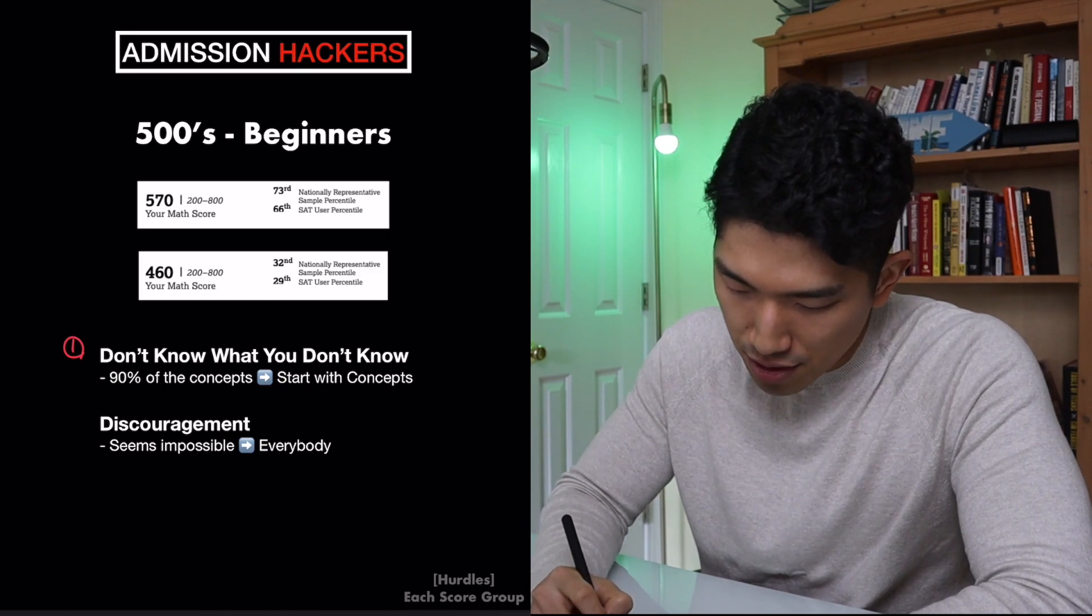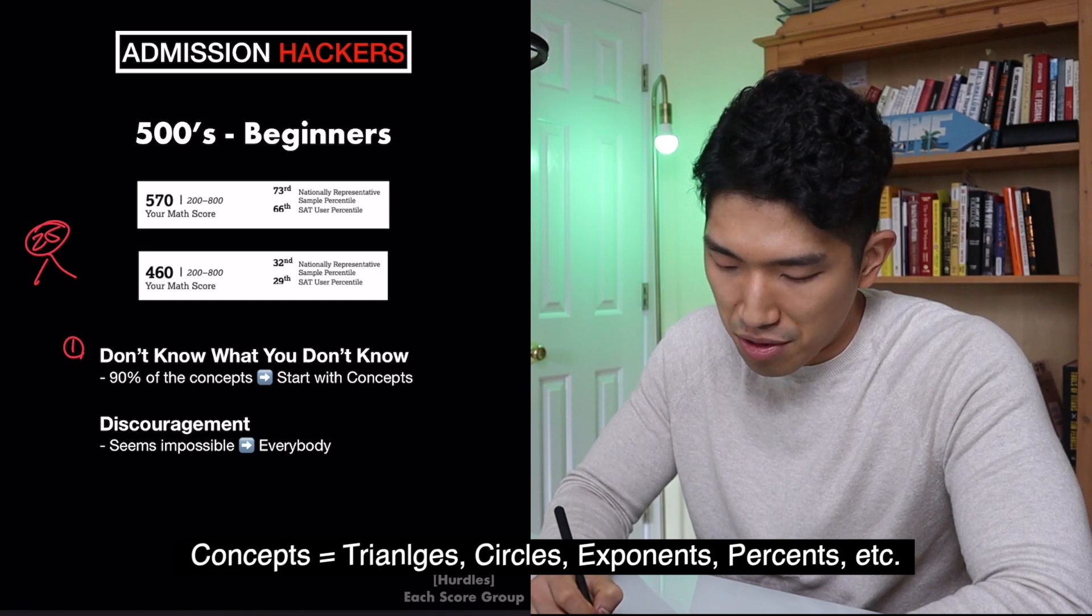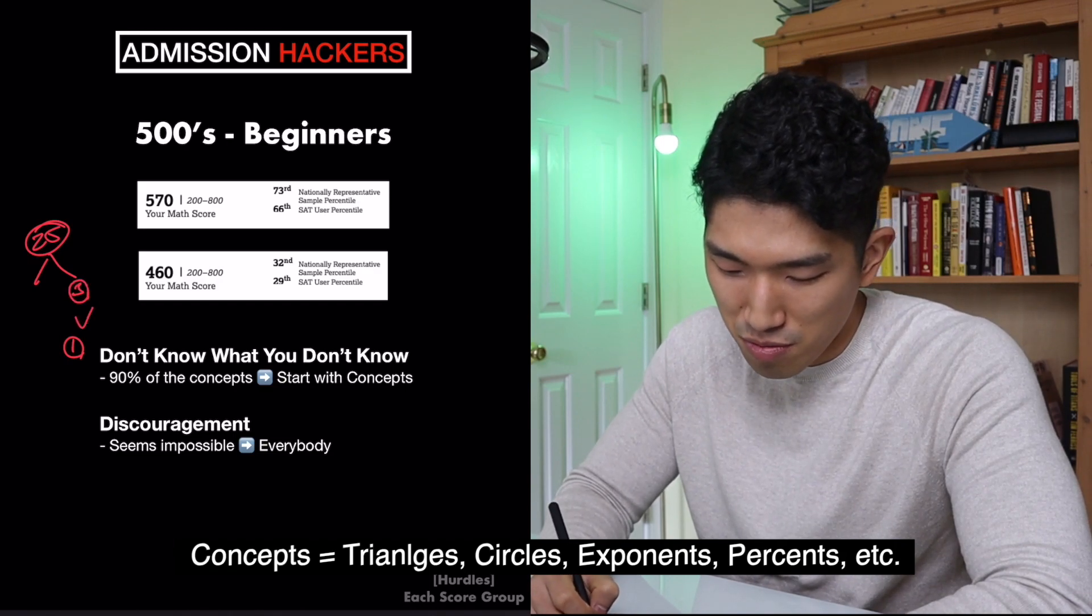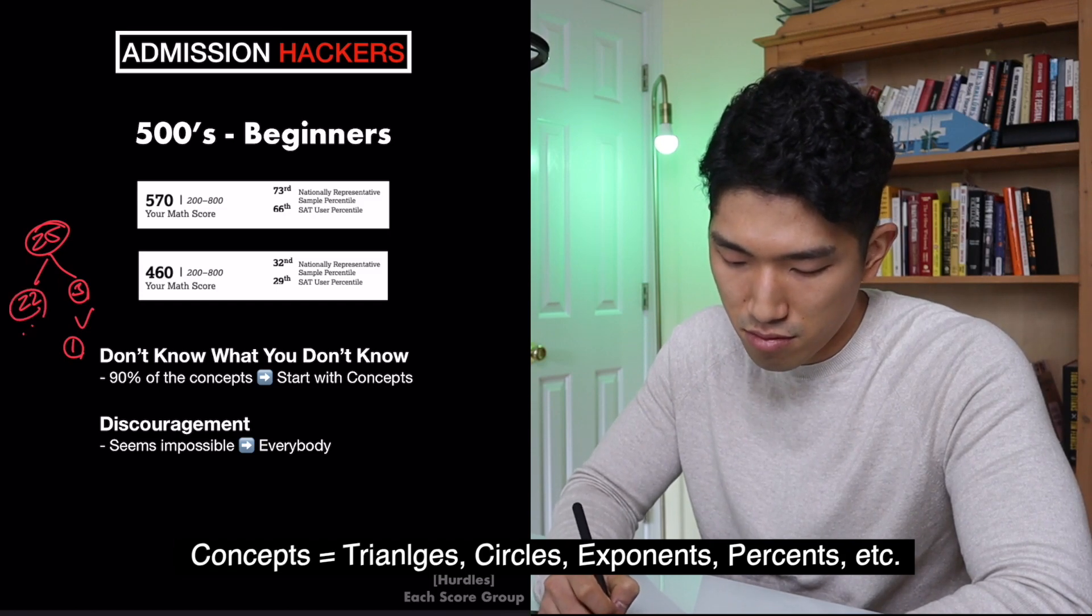See, on the SAT math section, there are about 25 concepts that show up. And you probably know about, I don't know, maybe like three concepts that you know. But there are the remaining 22 concepts where you just don't know.